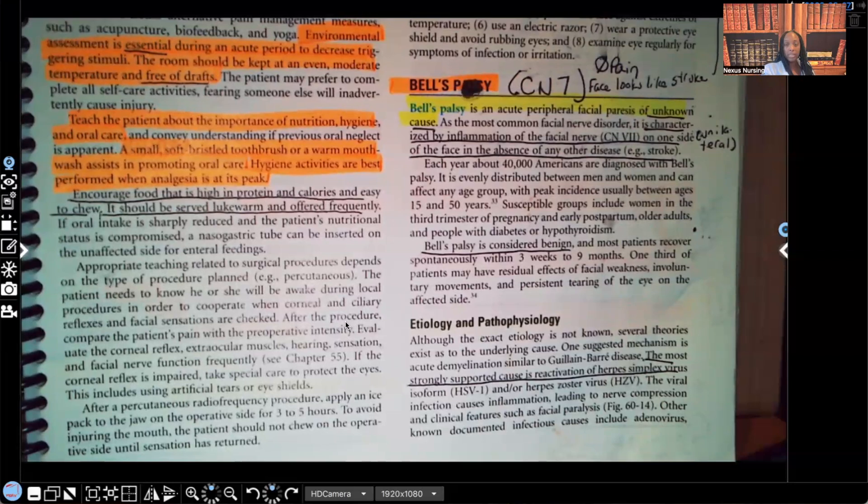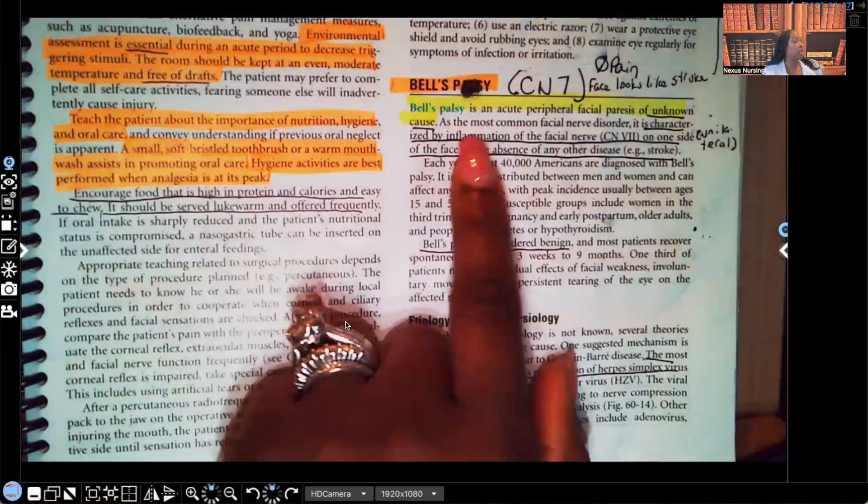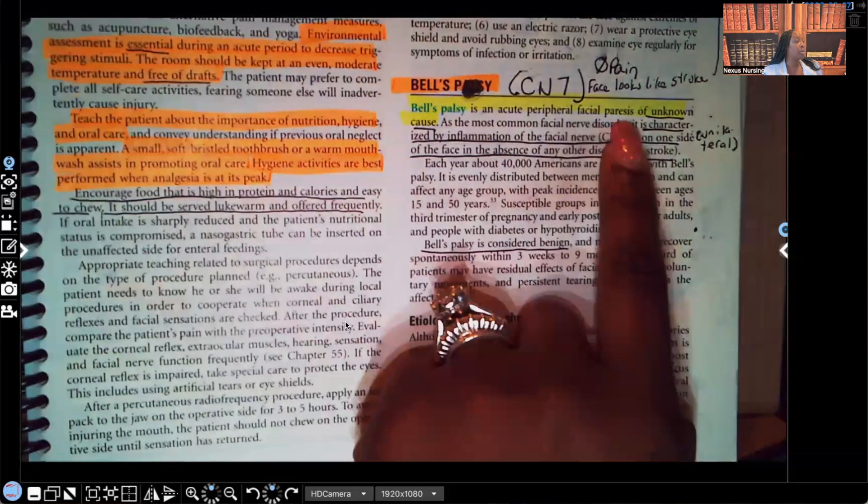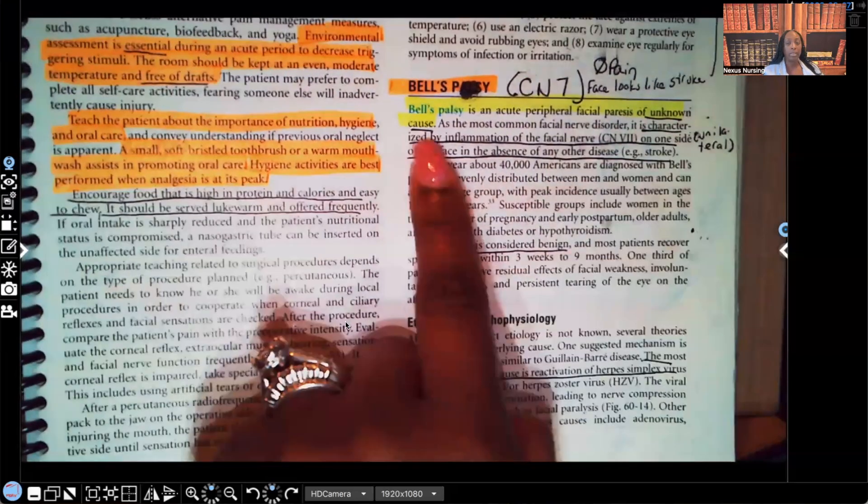Bell's Palsy. This book is old, so don't mind it. Bell's Palsy. You'll see that I wrote CN7. That's for cranial nerve 7. That's important for you to know. This is a nerve that's affected. So in Bell's Palsy, this is an acute peripheral nerve paresis of unknown cause.